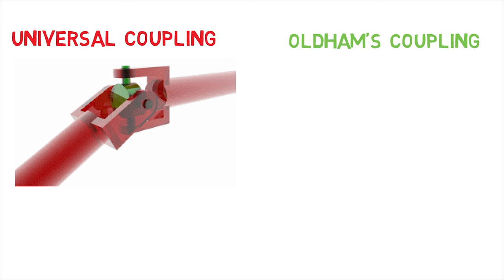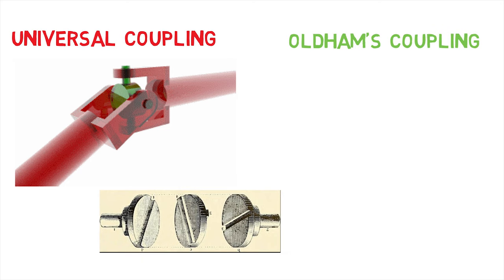An Oldham coupling on the other hand has three discs, one coupled to the input, one coupled to the output and a middle disc that is joined to the first two by tongue and groove. The tongue and groove on one side is perpendicular to the tongue and groove on the other.